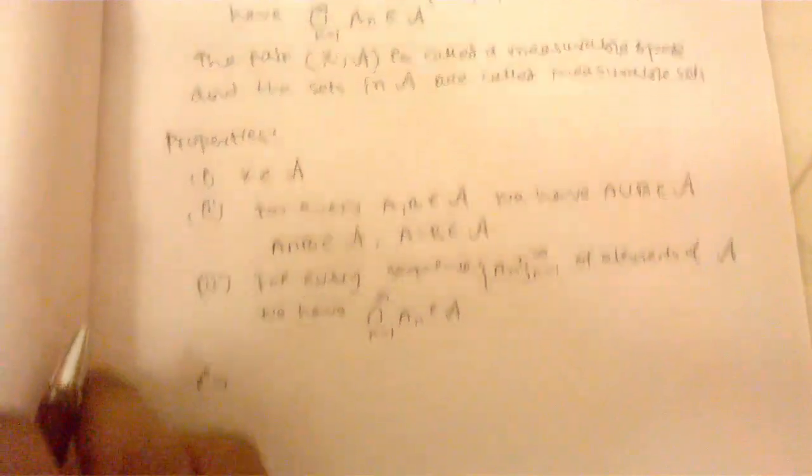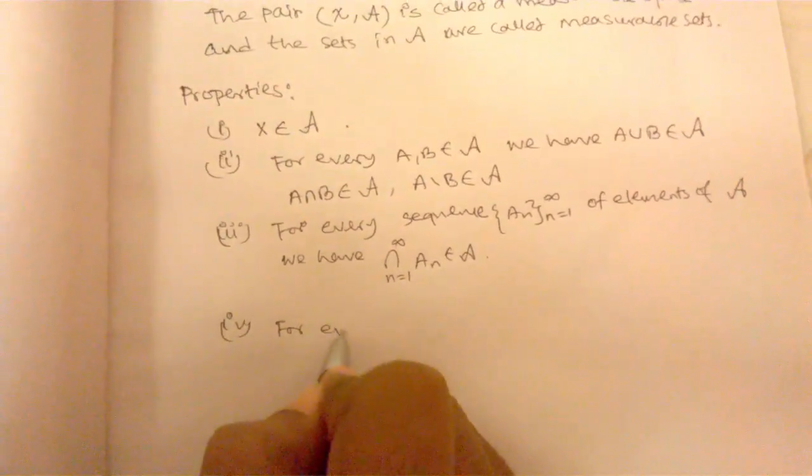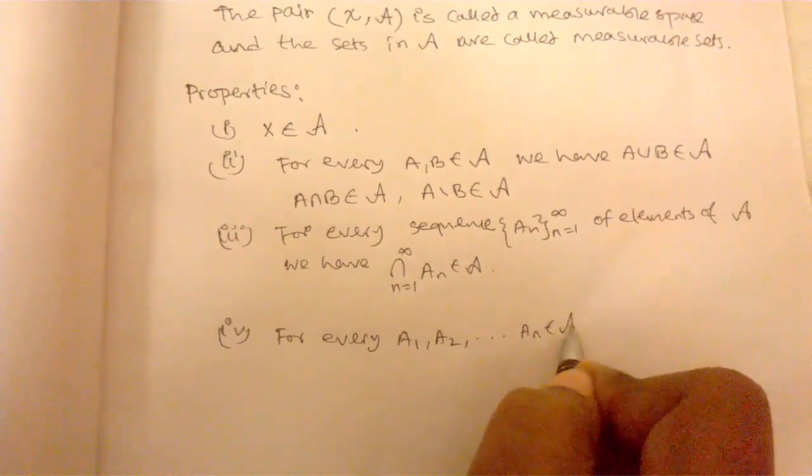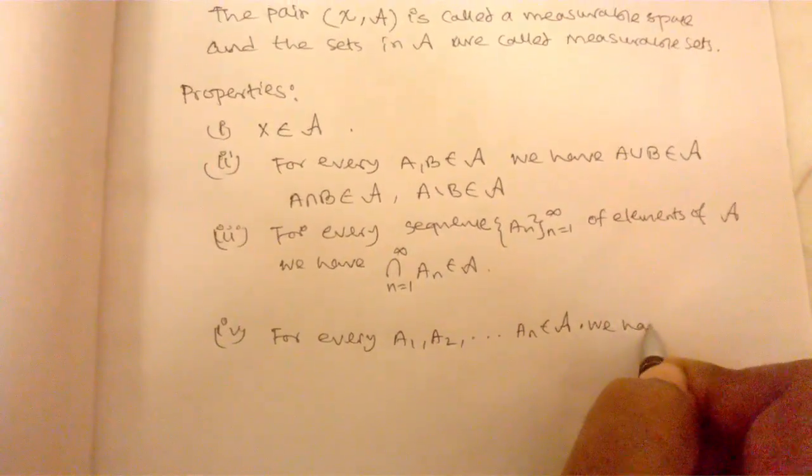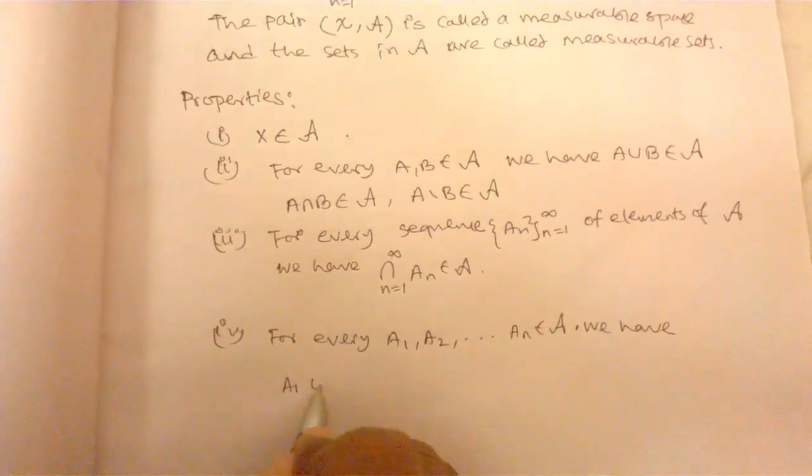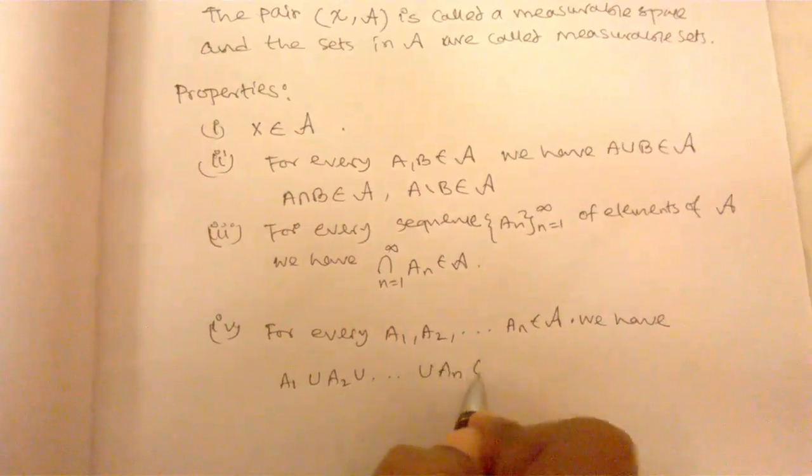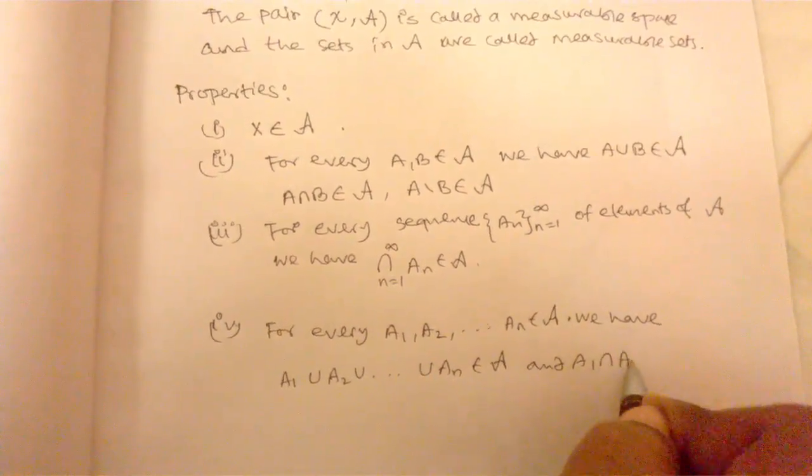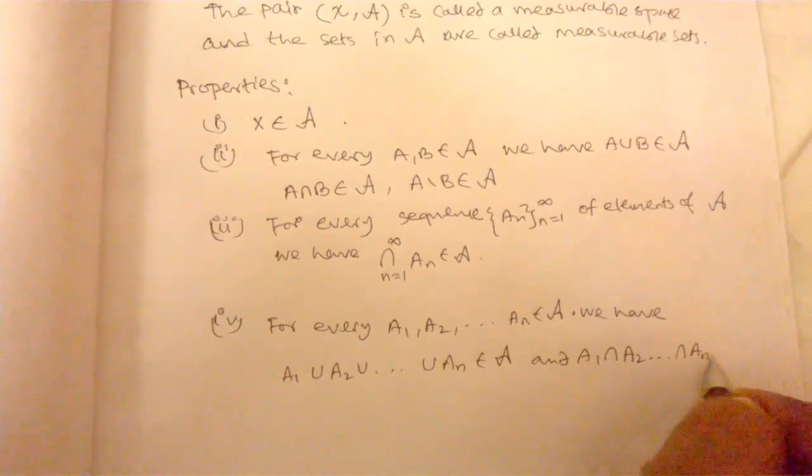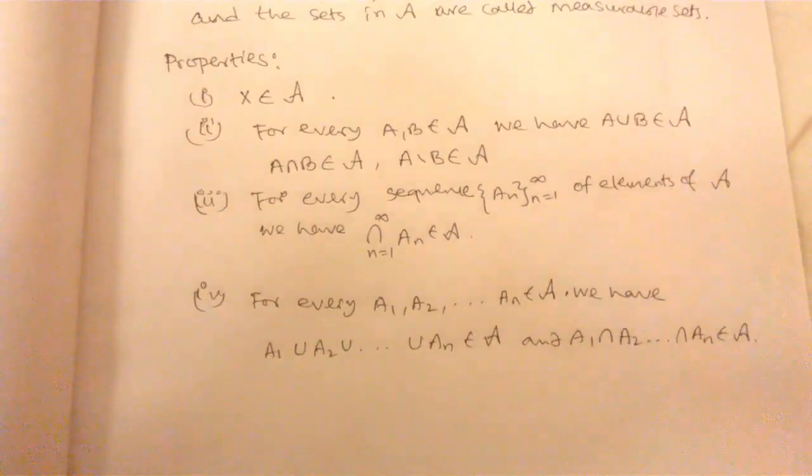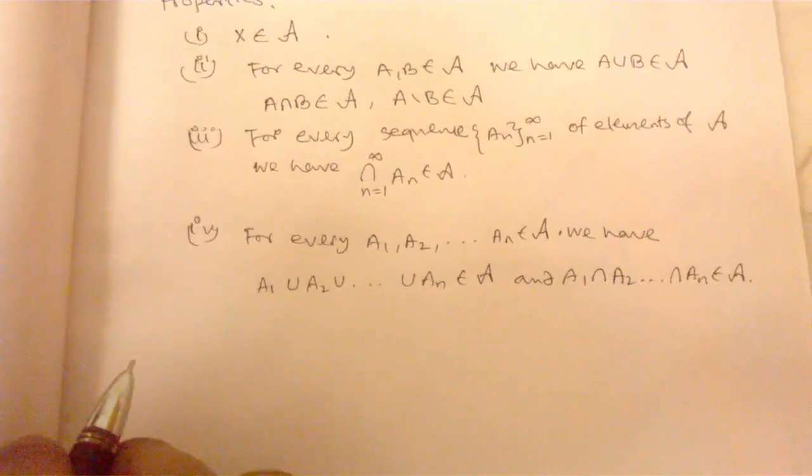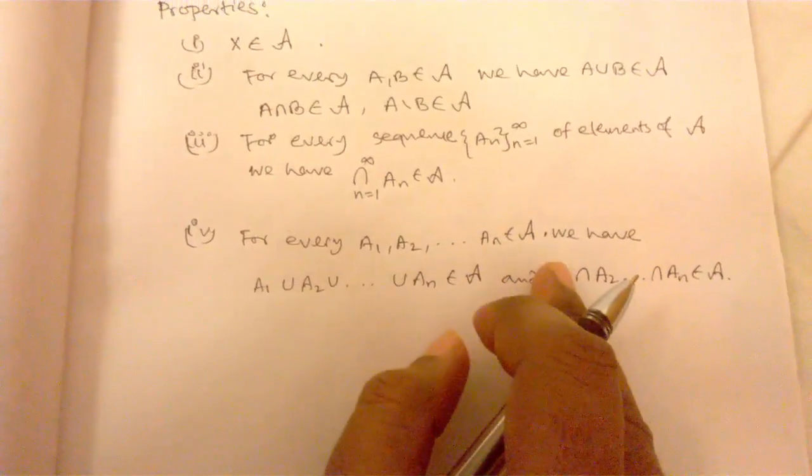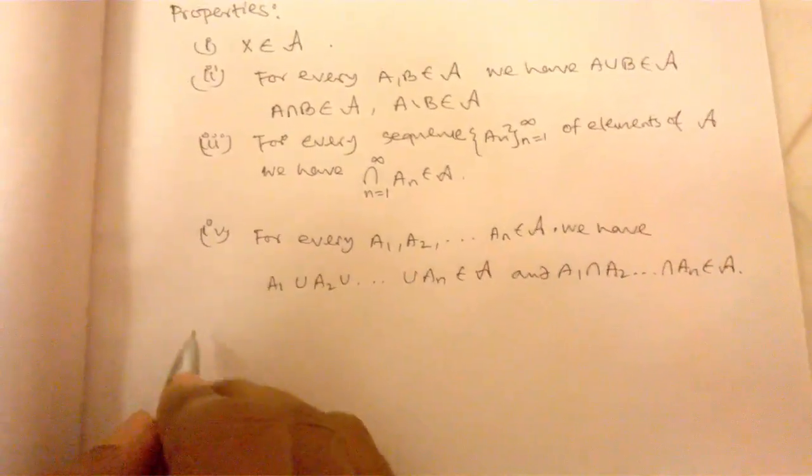Property four: for every A1, A2, dot dot dot, An belongs to the collection set A, we have A1 union A2 union dot dot union An belongs to the collection A, and A1 intersection A2 dot dot intersection An belongs to A. It is similar to applications of De Morgan's theorems for finite cases. We can omit the infinite; infinite terms from n plus 1 to infinity is taken as just phi, then it will be obviously true.